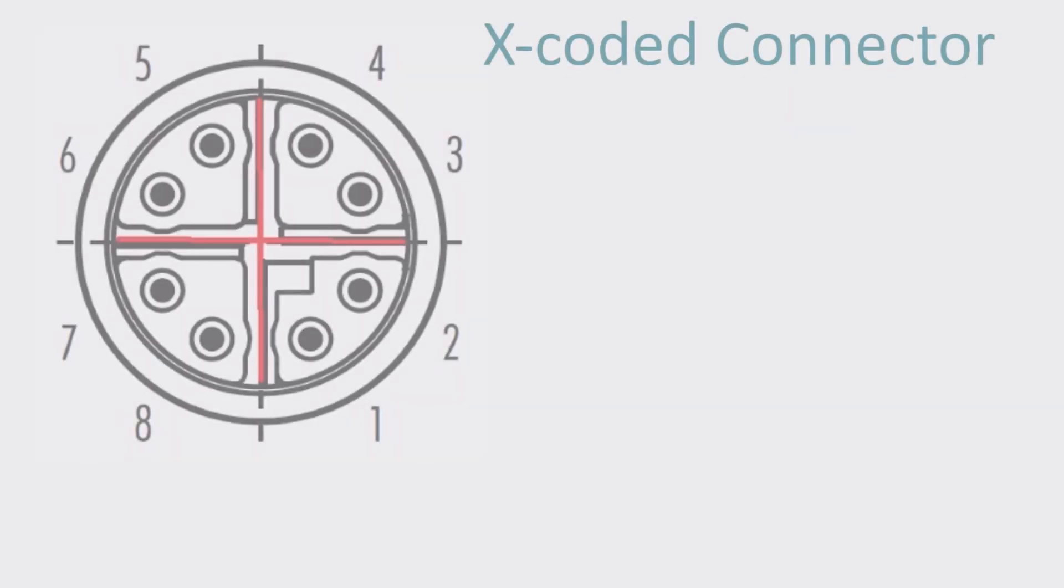The X-coded connector has similar configuration features as the previous group. This code type, however, is mainly concerned with high-speed data transfer with gigabit ethernet, and it only comes in 8 pins.